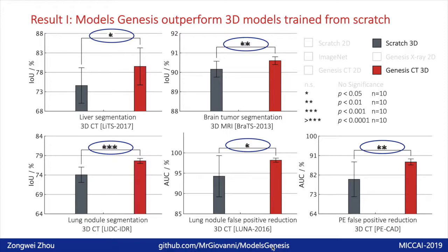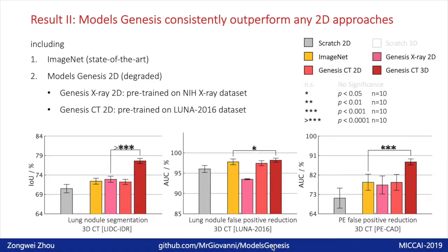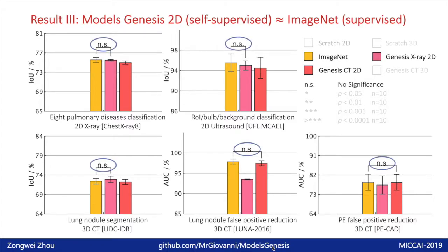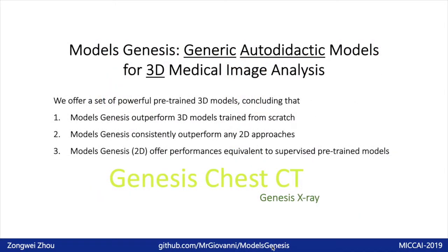Here the red bar is our Models Genesis, and the gray one is learning 3D models from scratch. Furthermore, 3D Models Genesis consistently outperform any 2D approaches, including state-of-the-art ImageNet models and our Models Genesis in 2D. We introduce these degraded 2D Models Genesis to have an apple-to-apple comparison with ImageNet models. Models Genesis 2D offers performance equivalent to ImageNet models. This result is unprecedented because no self-supervised method has thus far performed as well as ImageNet model-based transfer learning. Through all seven medical applications, we envision that Models Genesis may serve as the primary resource of 3D transfer learning for medical imaging.